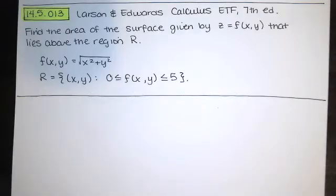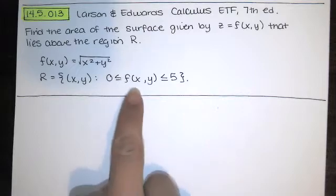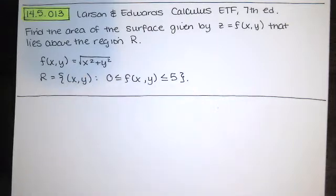In this video we solve problem 14.5.013 from the Larson and Edwards Calculus Early Transcendental Functions textbook, 7th edition. We're asked to find the area of the surface given by z equals f of xy that lies above the region R. This time, f of xy is the square root of x squared plus y squared, and R is the set of points xy in the xy plane such that the z values on our surface lie between 0 and 5.